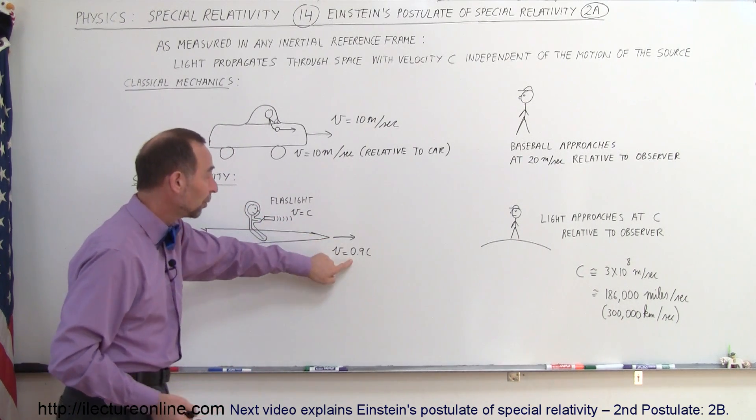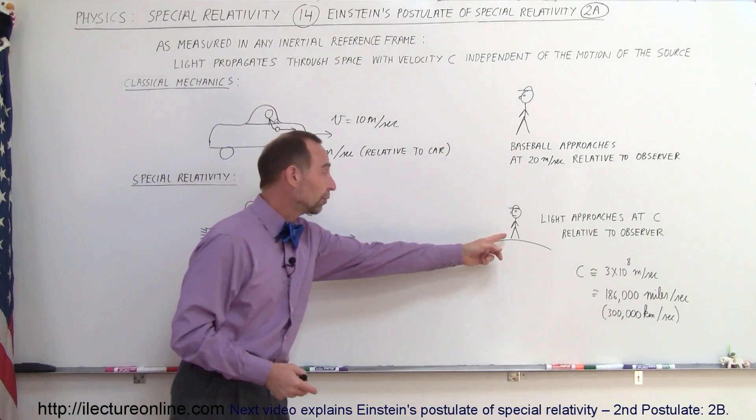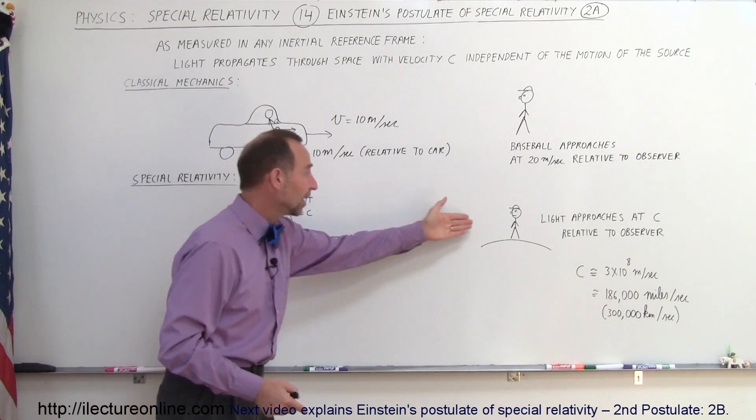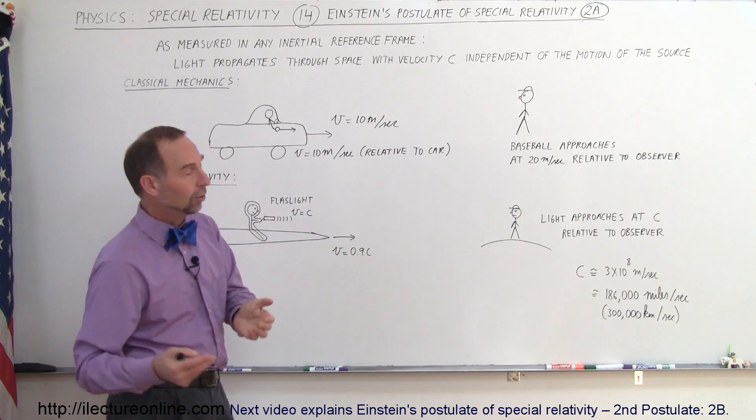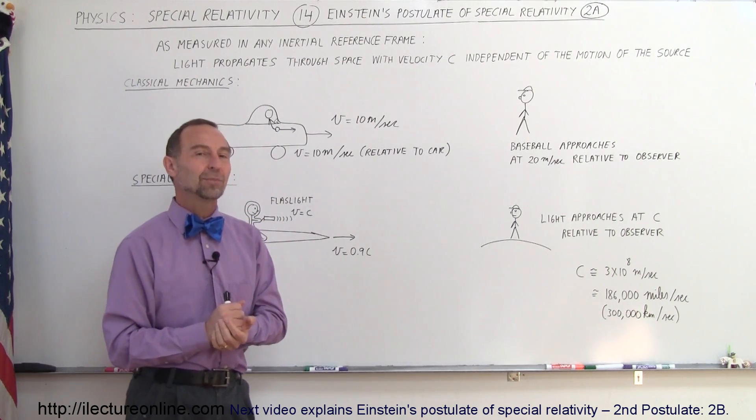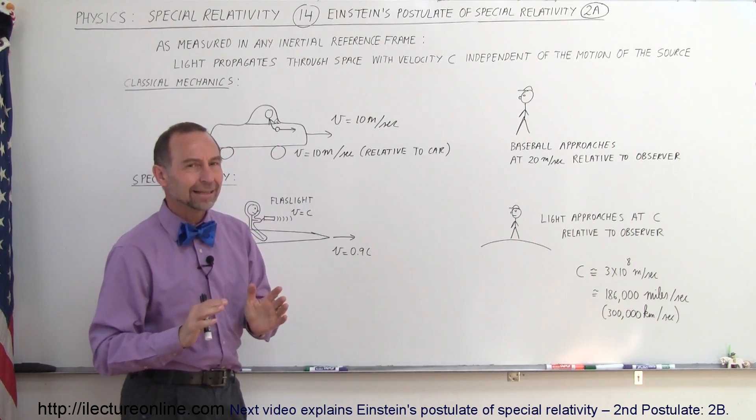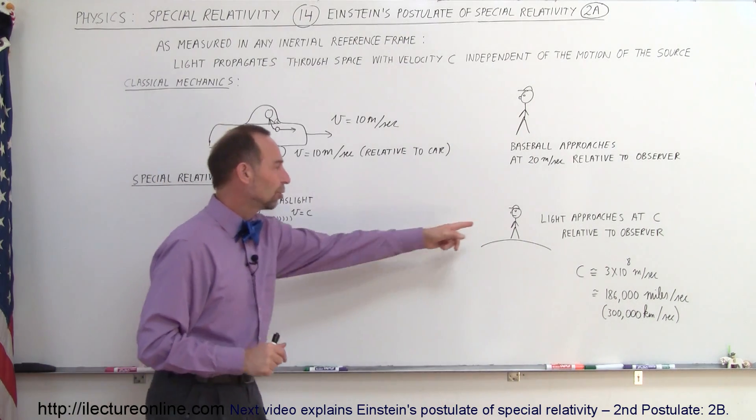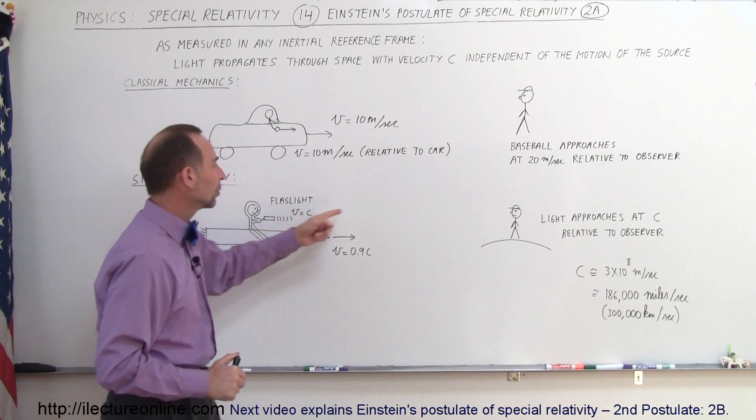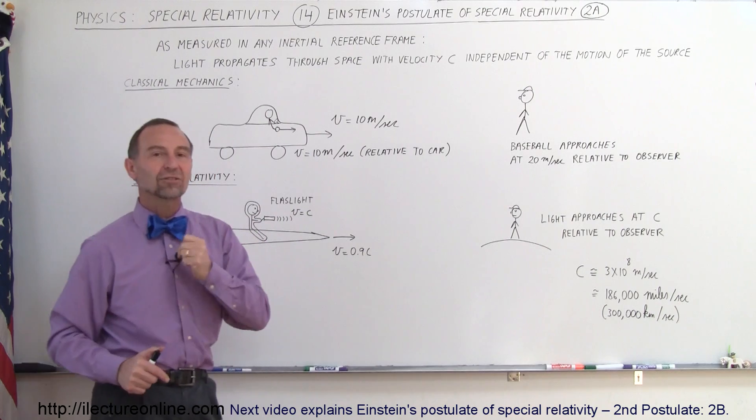So C plus 0.9C would be 1.9C. So this observer should see the speed of light approaching him or her at 1.9 times the speed of light. Einstein said that's not possible. This observer will see the speed of light coming towards him or her also at the speed of light.